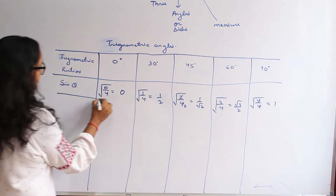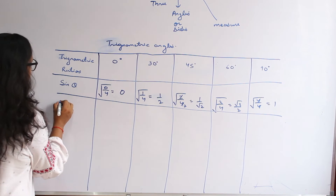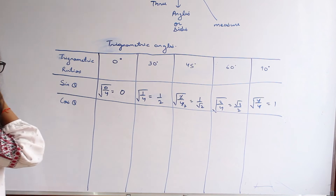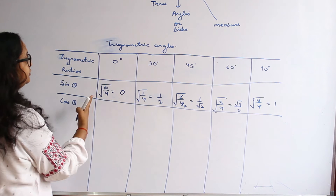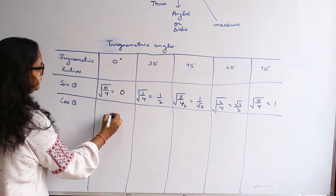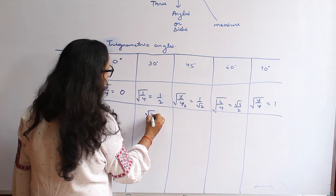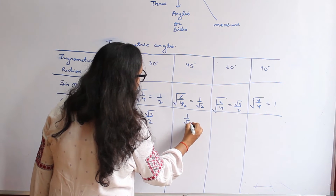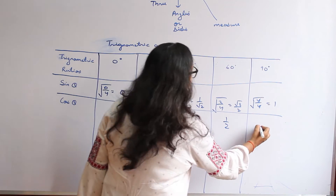Next is cos theta. Cos theta can be recognized as the reverse series of sin theta, which means: 1, then root 3 over 2, then 1 over root 2, then 1 over 2, and finally 0.